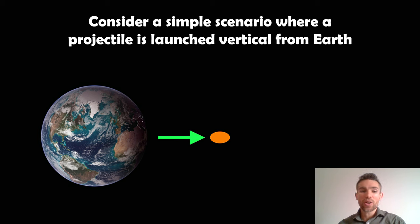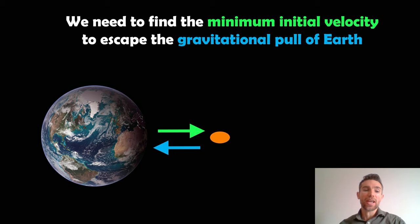So the simple scenario is: let's consider a projectile that's launched vertically from Earth. It could be anything here, could be a rocket, but what we want is this projectile being launched vertically from the surface of the Earth. We need to find a minimum initial velocity of that object so that it will escape the gravitational pull of Earth, which is trying to pull it back down. If it's not greater than that minimum initial velocity, it will fall back down to Earth. If it's greater, then it will actually escape to infinity.